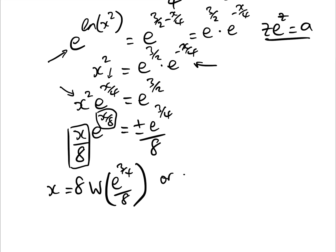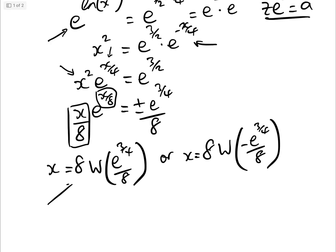Or we have x equals 8 w of minus e to the 3 quarters over 8. Now, this solution here gives us one solution where x is approximately 1.70966 because w of e to the 3 quarters over 8 from an online calculator gives 0.213707. So there is one solution.